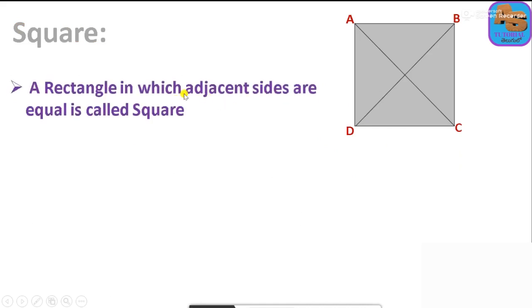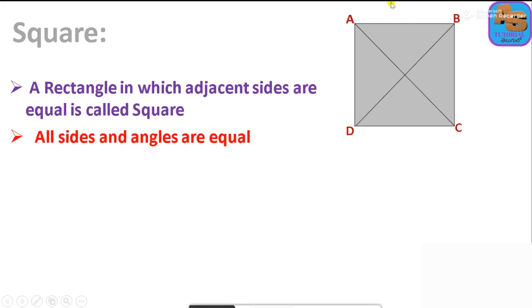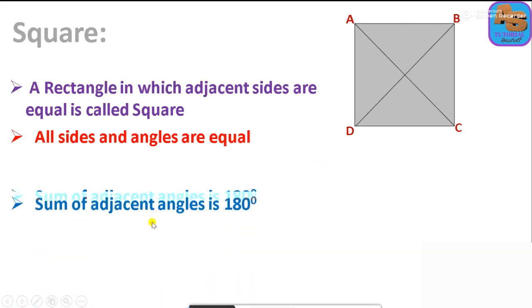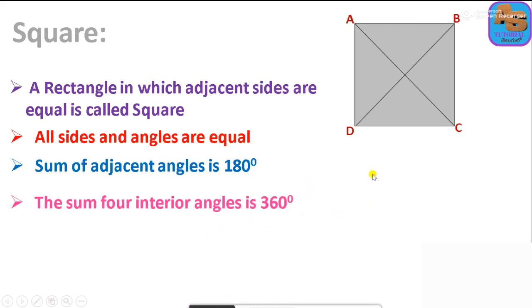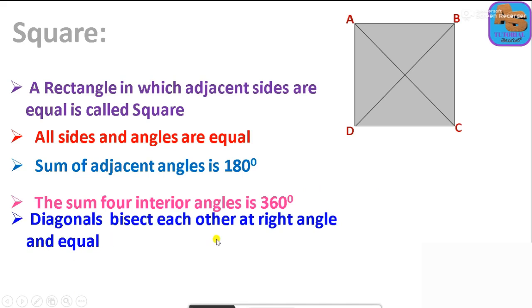Next is square. A square is a rectangle in which all sides are equal. In a square, all angles are equal to 90 degrees and all sides are equal. The sum of the adjacent angles is 180 degrees and the sum of the four interior angles is 360 degrees.